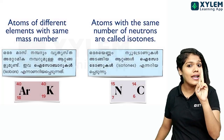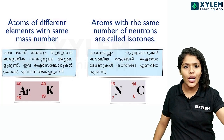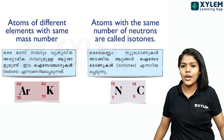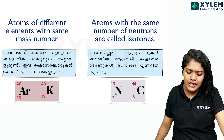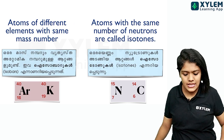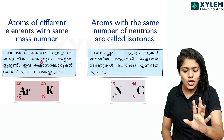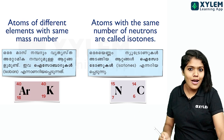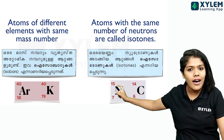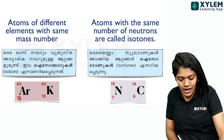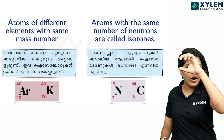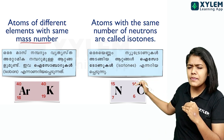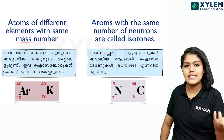The next concept is isobars. Isobars are atoms of different elements with the same mass number. For example, Argon-40 and Calcium-40 both have mass number 40 but are different elements.